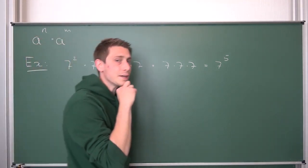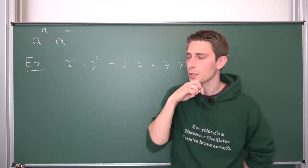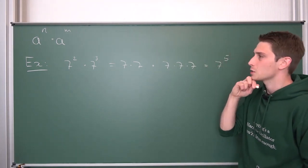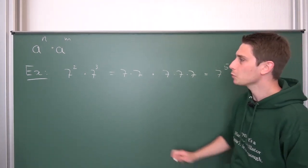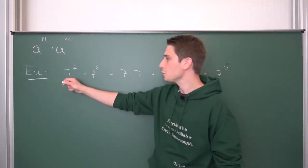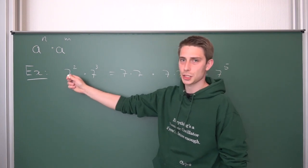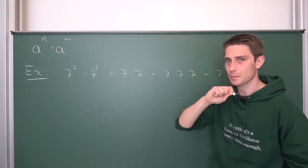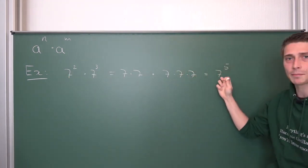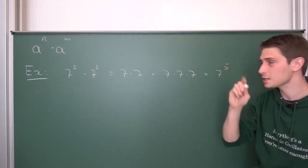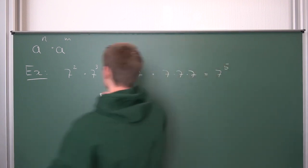Reversing the verbal definition of exponentiation gives us 7 to the 5th power. So it simplified quite nicely. What we can gather from this is we have multiplied two exponentiations with the same base together and got out the same base, just a different exponent.